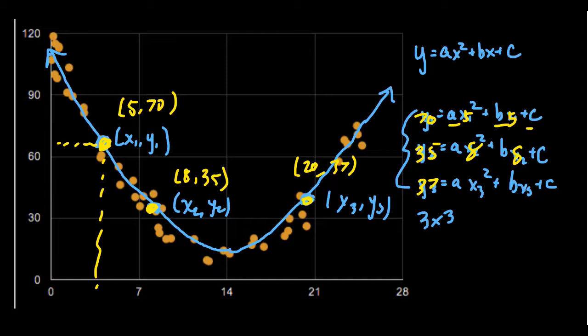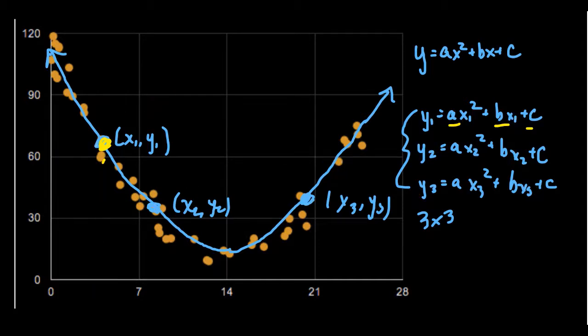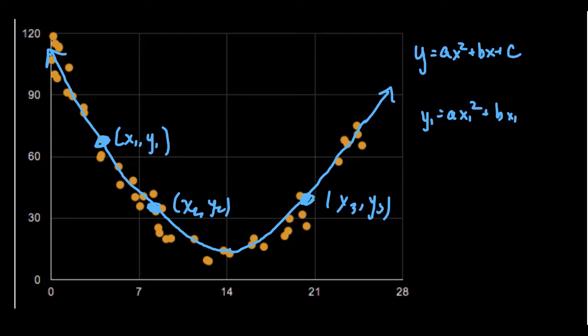Turns out linear systems, at least three by three linear systems is overkill. And that's because we're using the wrong form of the quadratic equation.